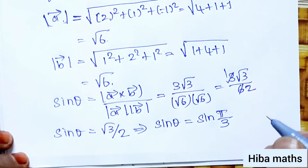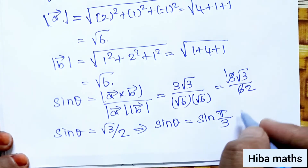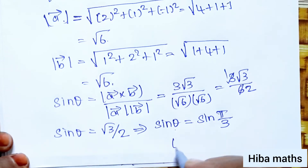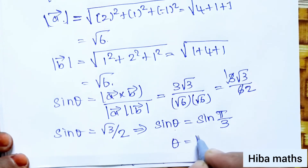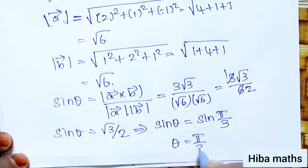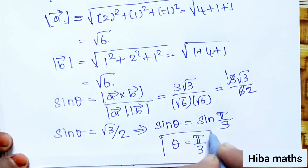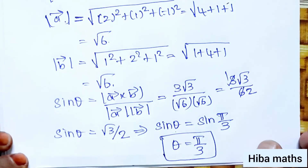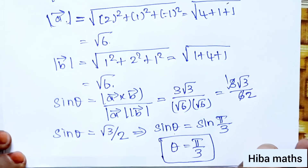Correct. Sin 60 degrees gives answer root 3 by 2. The theta value is equal to pi by 3. So the angle between the two vectors is theta equals pi by 3. I hope you understand. Thank you so much for watching. Bye-bye.